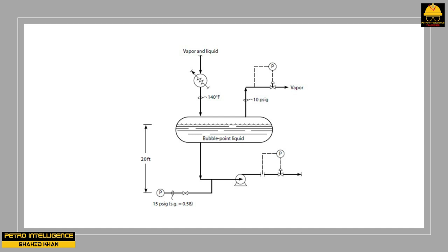As the flow control valve on the discharge of the pump is opened, the velocity of liquid in the eye of the impeller goes up. More of the pump's suction pressure, or feet of head, is converted to velocity or kinetic energy. This means that the required NPSH of a pump increases as the volumetric flow through the pump increases. The units of NPSH are feet of liquid head.